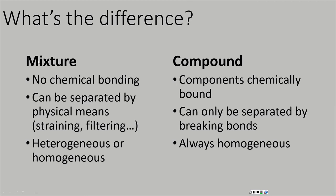Let's compare mixtures to compounds. In mixtures, there is no chemical bonding between the solute and the solvent — they can be separated by physical means such as straining or filtering, and they can be heterogeneous or homogeneous. But compounds are chemically bound to each other — there are chemical bonds between the different components, and those components can only be separated by breaking those bonds. We'll talk about chemical bonds in just a few moments.